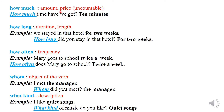'How much' is for uncountable things — things you cannot count one, two, three. Example: How much time have you got? Time is like water — you cannot count 'one water, two water.' How much time have we got? Ten minutes.